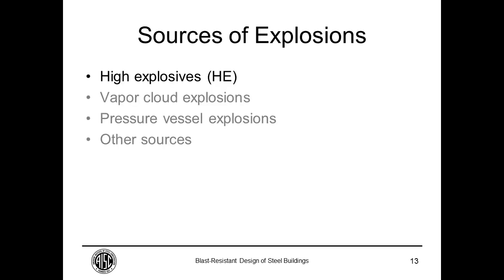So those are four categories. The ones you may most encounter in designing buildings are high explosives, and also vapor cloud explosions — typically liquid or gaseous releases that, given the right conditions, can accelerate to a detonation. We'll also talk about pressure vessel explosions and other sources of high-rate energy releases that could generate an air shock of interest in designing a steel structure.